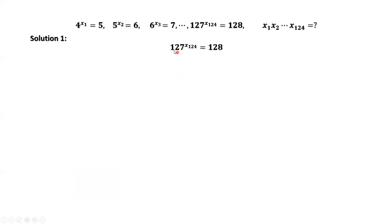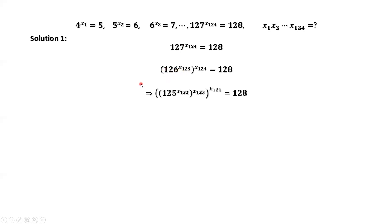This is a given: 127 to the power of x124 equals 128. We rewrite 127 in terms of 126: 127 equals 126 to the power of x123. Again, we rewrite 126 in terms of 125, which is 125 to the power of x122. We keep doing this until we reach the base 4. We have this equation.